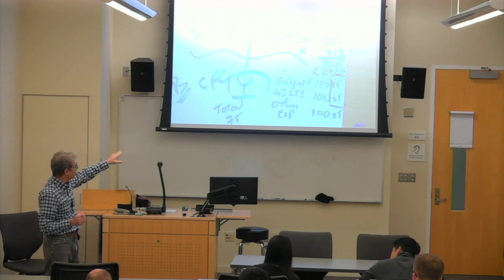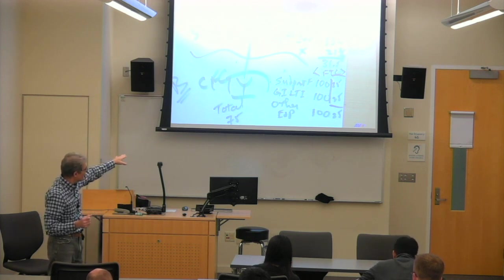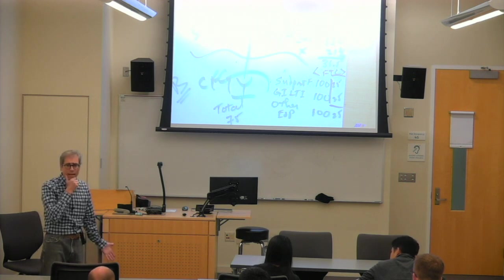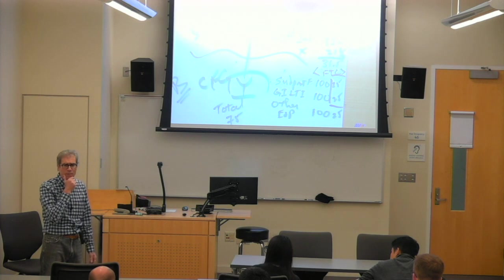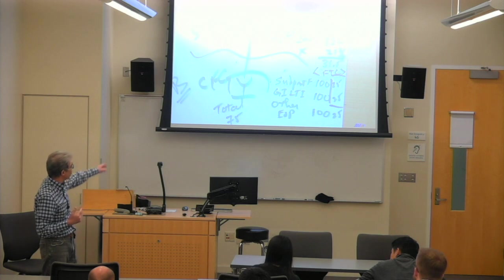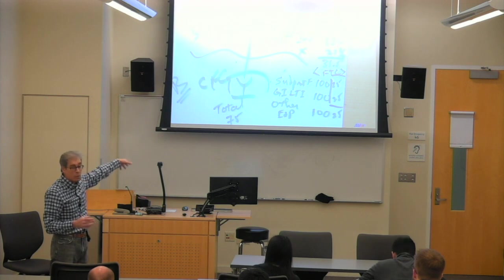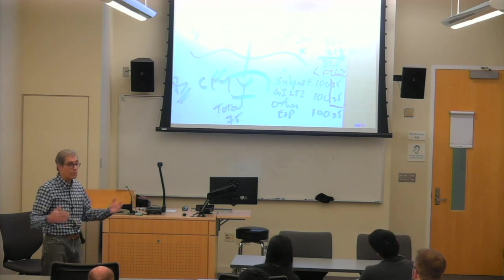There's 100, 100, and other E&P of 100. When Y pays a dividend, how do we know what's been paid up? Do we know whether it's paid out of subpart F income, GILTI, or other E&P? And does it matter?